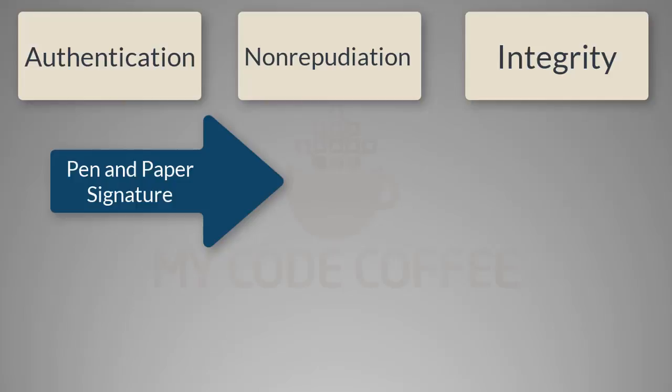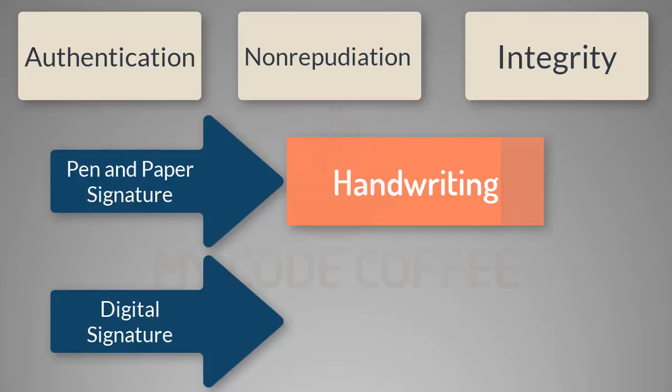Digital signature also means exactly these three things. Pen and paper signature heavily relies on the handwriting of the individual — the three properties of authentication, non-repudiation, and integrity assume that the handwriting of the individual is unique and no one else can copy it. Of course that is not always true, and we see cases when someone is able to forge the signature. While pen and paper signature relies on handwriting, a digital signature relies on an algorithm to produce a mathematical scheme.